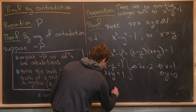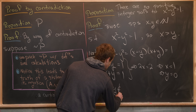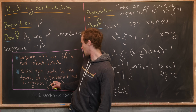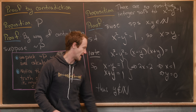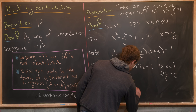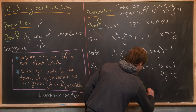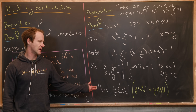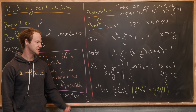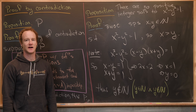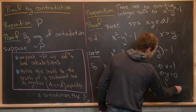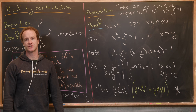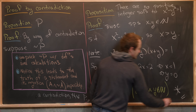But y equals zero means that y is not a natural number. So we have y is a natural number and y is not a natural number — in other words, y is a positive integer and y is not a positive integer. But that's obviously a contradiction. Thus, there are no such positive integer solutions.